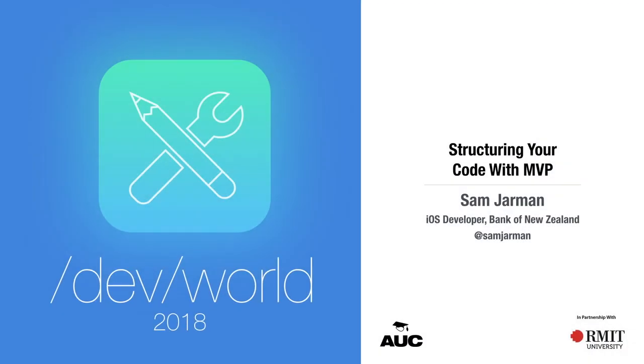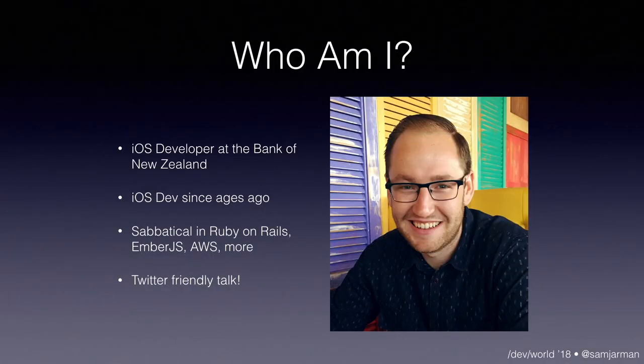Hi everyone, how's it going? I'm Sam and I'm going to be talking about Structural MVP. First of all, who am I? I'm an iOS developer at the Bank of New Zealand. I live in Wellington, New Zealand. We have a team of about 11 to 13 iOS developers. I've been doing iOS dev since the early days, since about 2009. I did a bunch of apps on the App Store before I left high school and then meandered off to C-sharp .NET world during university, then went back to work at a start-up for about three years doing iOS and a lot of time on Ruby on Rails, AWS, Ember.js — a sabbatical in some really well-tested and easy-to-structure frameworks, which kind of inspired this talk today.